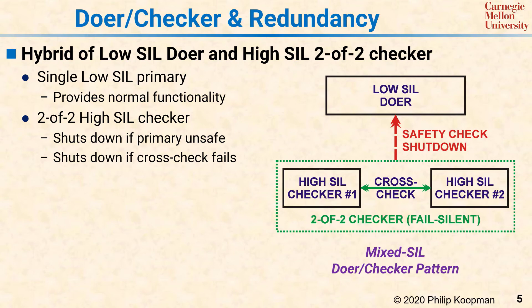It might be that the doer is a big 32-bit CPU with lots of resources, and the checkers might only be 8-bit CPUs that are just enough to get the checking done. Because high-SIL software can be dramatically more expensive to develop than low-SIL software, this approach can be a significant win in system cost due to reduced software development costs.